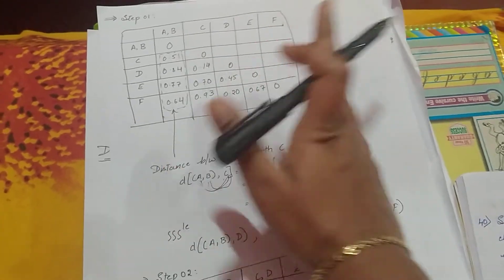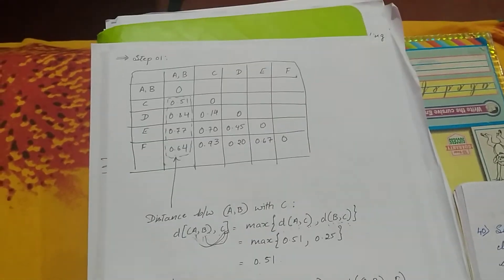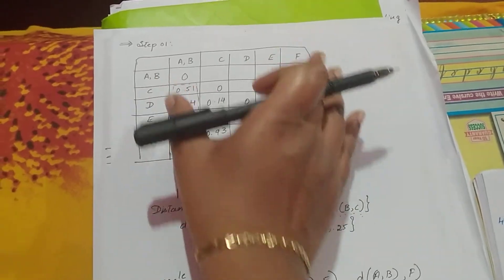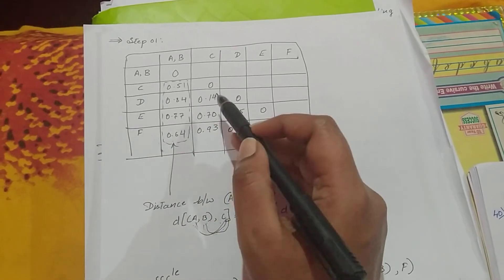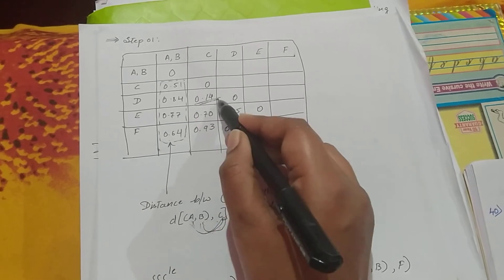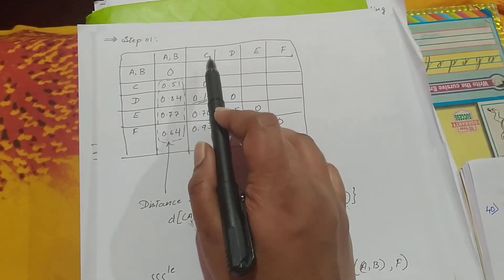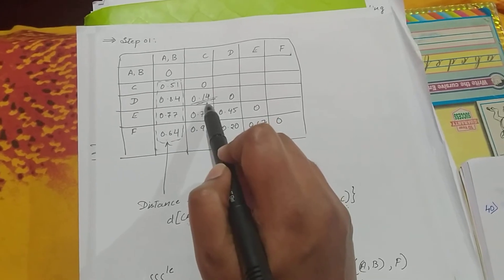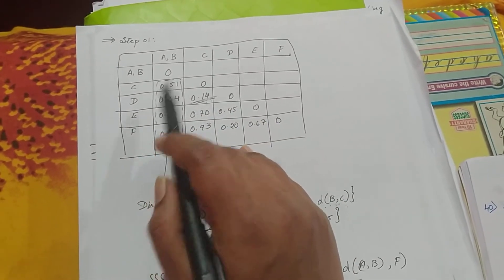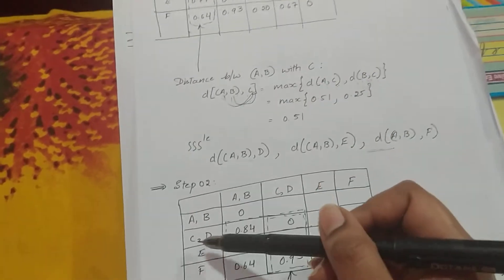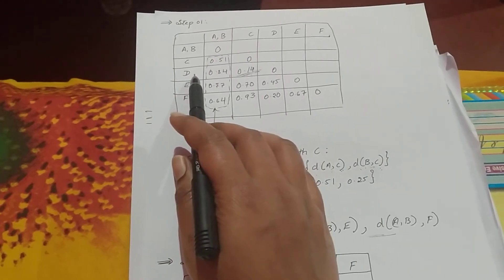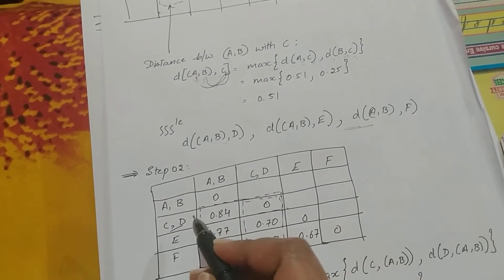That completes step one. In step two, we repeat the same process: from the step-one table we check which is the minimum value. The minimum is 0.14, which is the distance between C and D. So we form C and D as one particular cluster, grouping the C and D columns together.